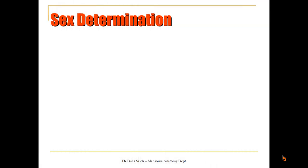For the external genitalia, let's start with sex determination — how sex is determined in the embryo. In the beginning we have the genetic sex, which occurs at the time of fertilization. If a sperm carries the Y chromosome and fertilizes the egg, then the zygote that results is XY, meaning it will be a male. If the sperm carries the X chromosome and fertilizes the ovum, then the zygote will be XX, meaning it will be a female. So genetic sex is determined first.